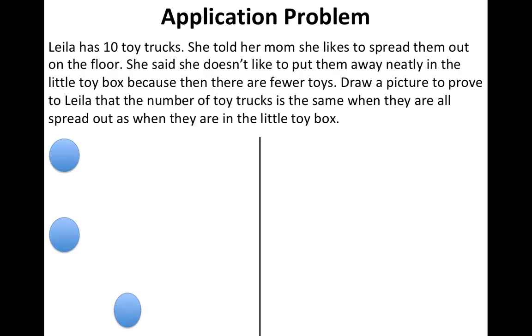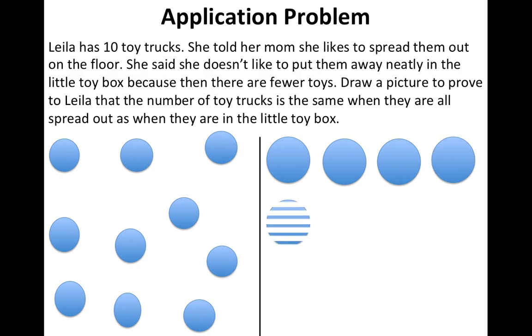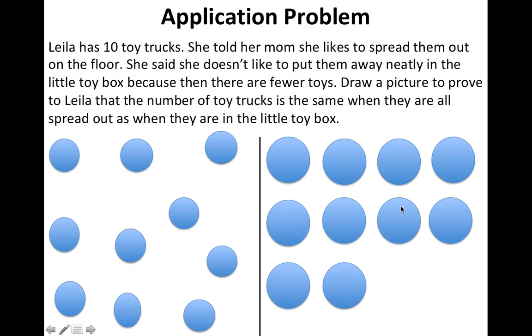Now I'm going to draw a picture of 10 toys. Since I don't have toy trucks, I will draw them in circles. I just have to make sure I have 10 of them. Now I have a total of 10 circles, they're all spread out, and we're pretending these are Leila's 10 toy trucks. Now we're going to put 10 circles in neatly to show what the neat toy trucks should look like compared to the spread out look.